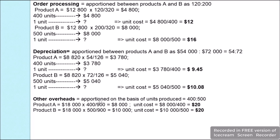Other overheads of $18,000 are apportioned in the ratio of units produced, 400 : 500. For product A: $18,000 × 400 ÷ 900 = $8,000 total; unit cost = $8,000 ÷ 400 = $20. For product B: $18,000 × 500 ÷ 900 = $10,000 total; unit cost = $10,000 ÷ 500 = $20.